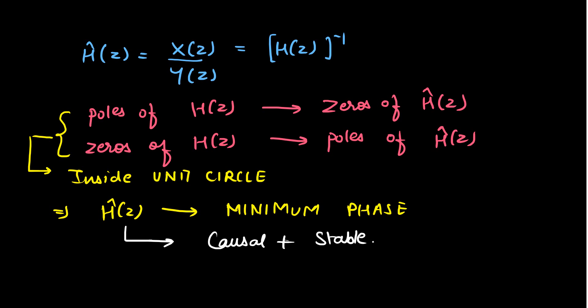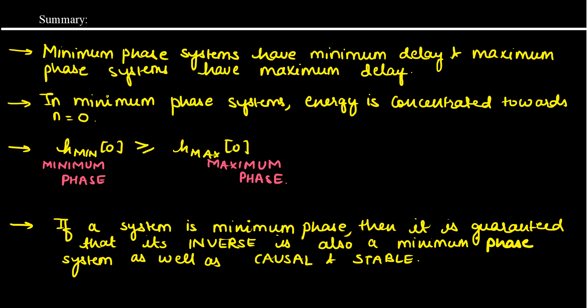Before ending this lecture, let us summarize what we have seen. A minimum phase system has minimum delay, and a maximum phase system has maximum delay. The minimum phase system's energy is concentrated more towards n equal to zero, because the value at n equal to zero for a minimum phase system is greater than or equal to the value at n equal to zero for a maximum phase system. We have also seen that if a system is a minimum phase system, then it is guaranteed that its inverse is also a minimum phase system, and it is causal as well as stable.